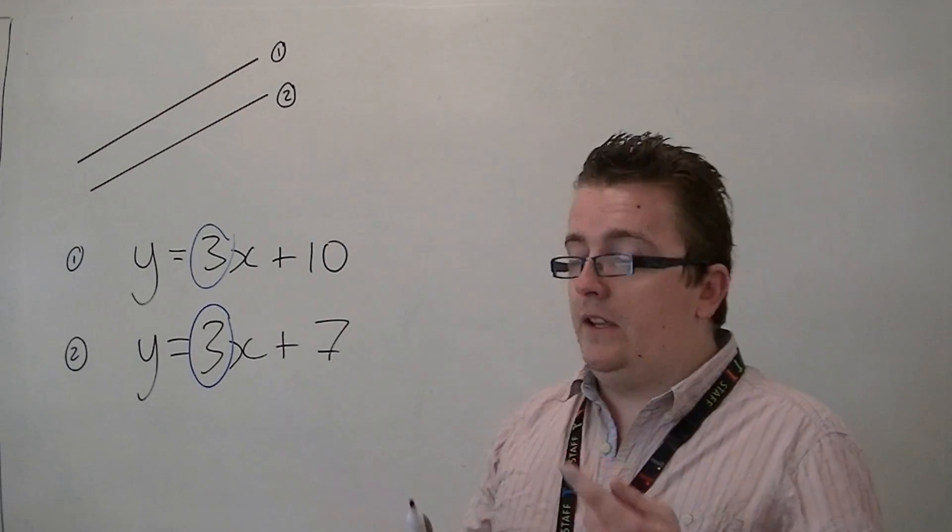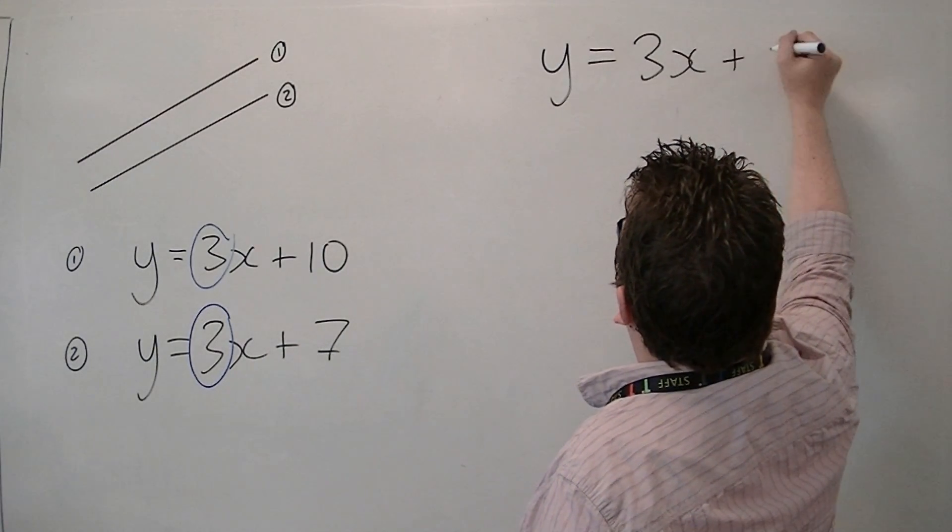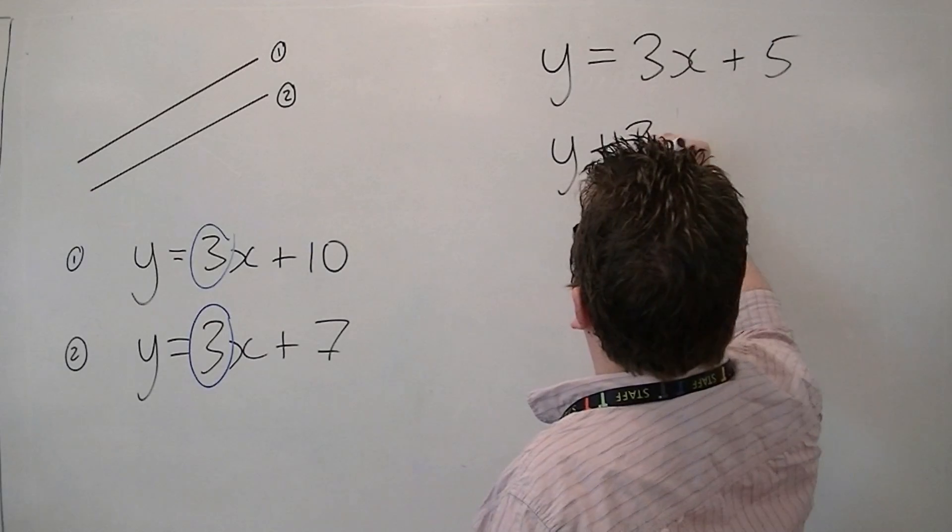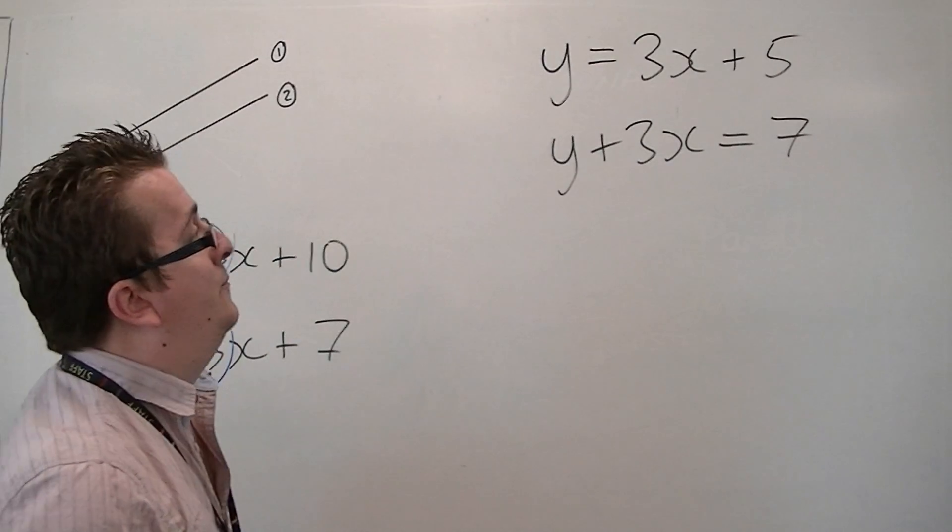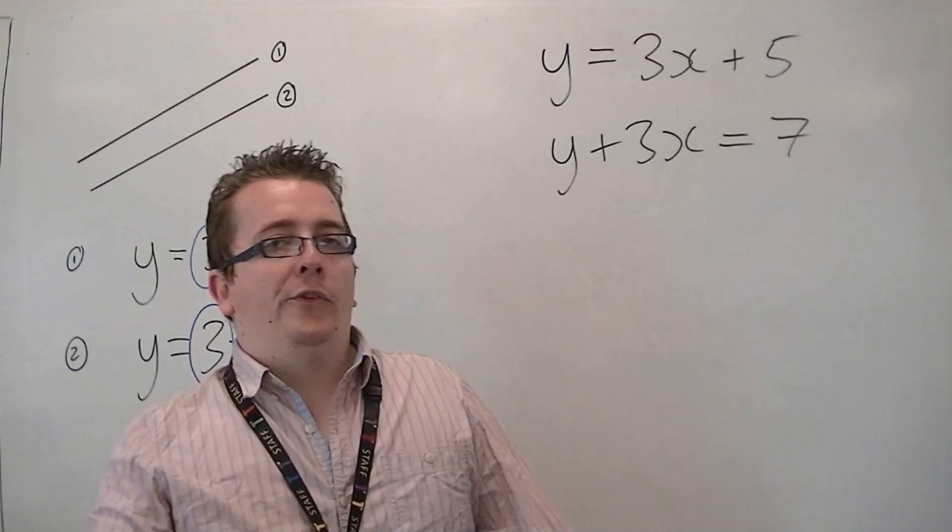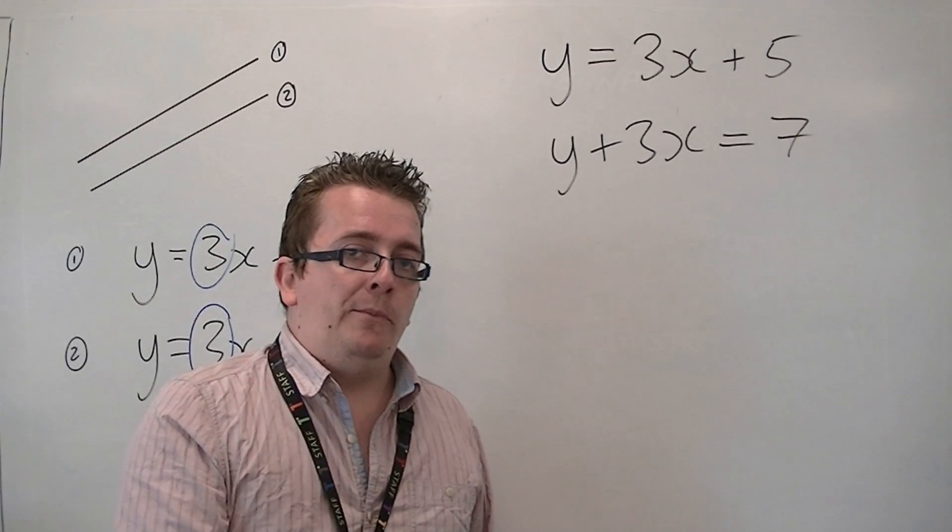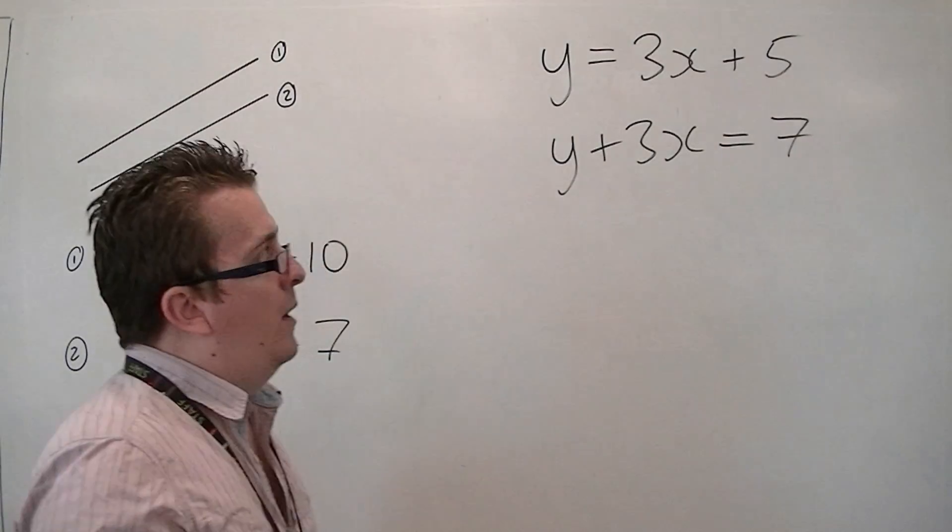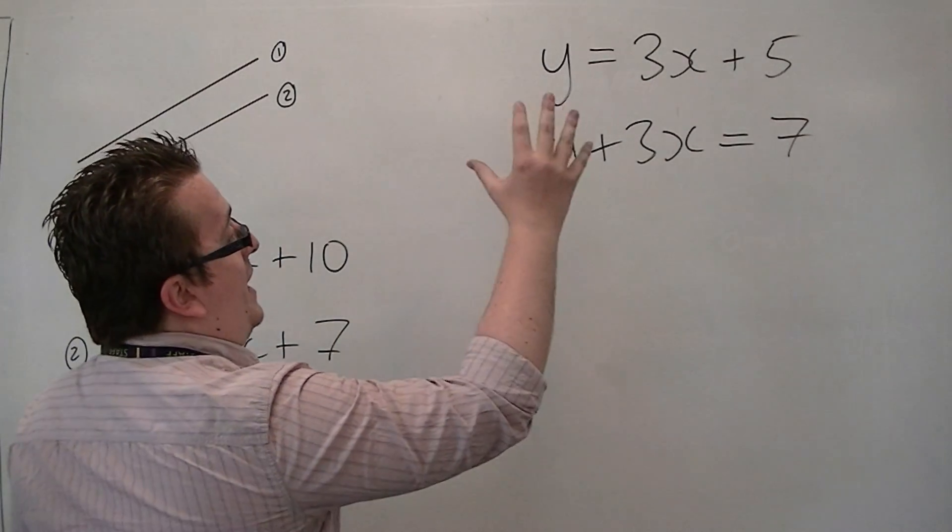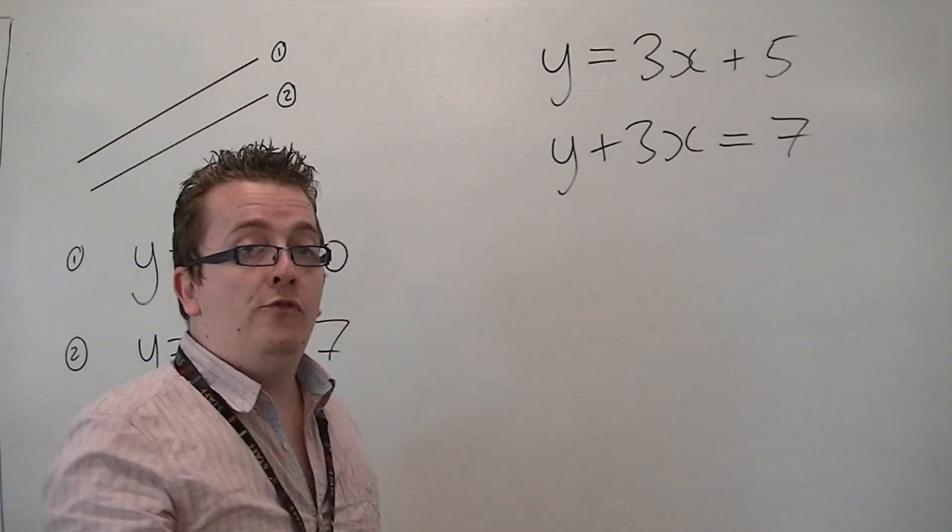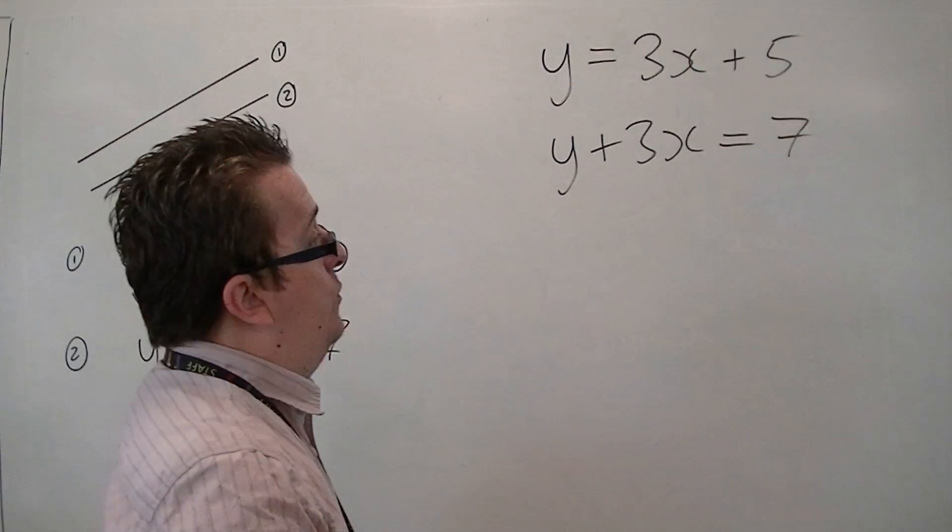Make sure you don't make the mistake of thinking like this. Let's say we've got y equals 3x plus 5, and y plus 3x equals 7. And you're asked, are these two lines parallel? You might want to think for a moment, or pause this, and think, why might a student think that these two lines are parallel? If you think about it, they both have this 3x. The number in front of the x is the same. So, therefore, they must be parallel. Not quite true, or not true at all, really.